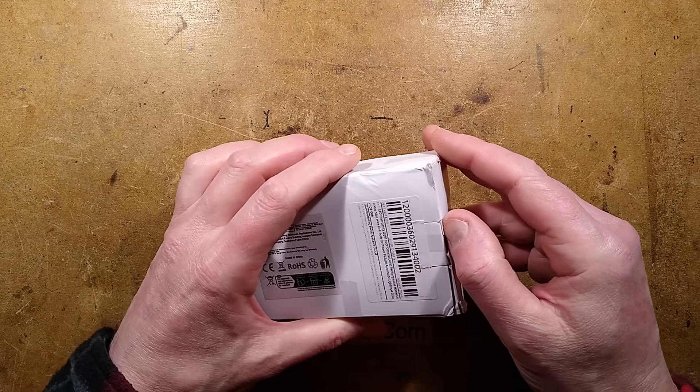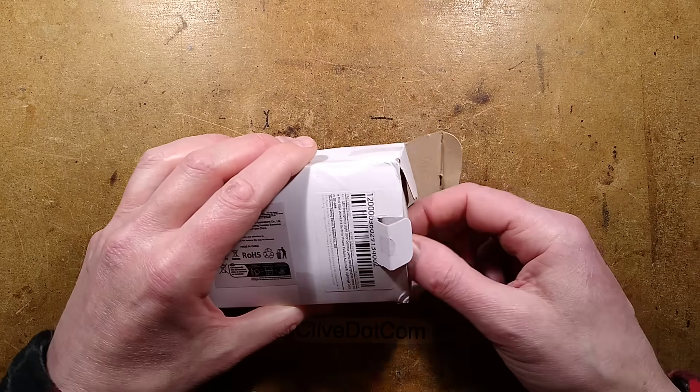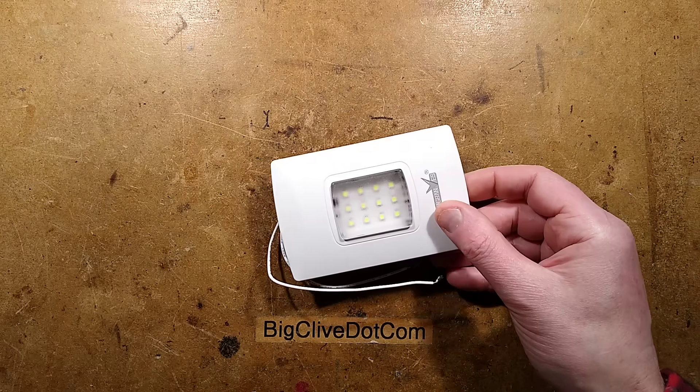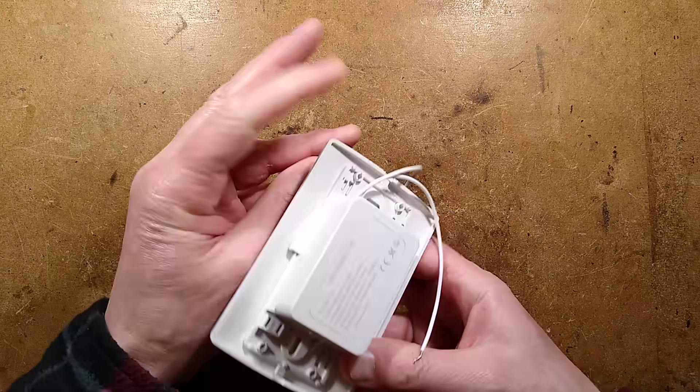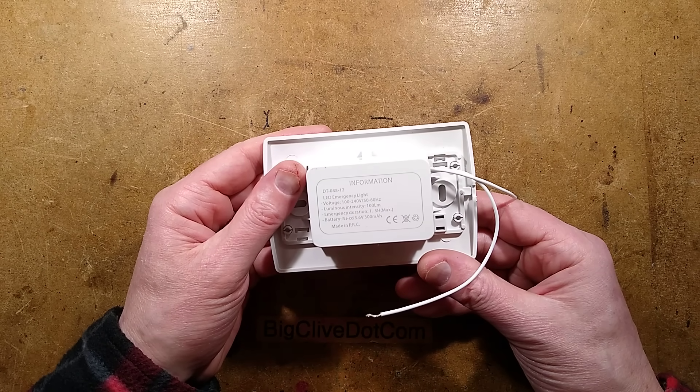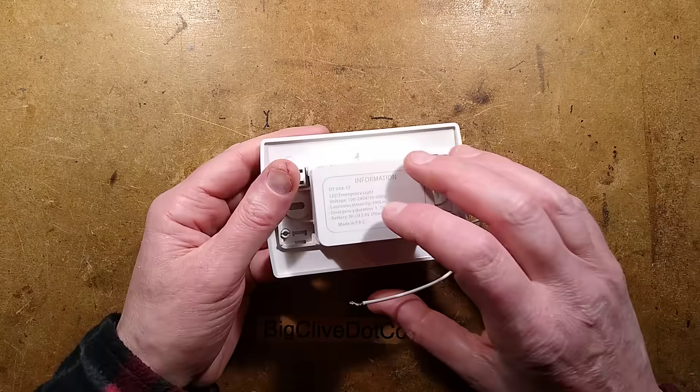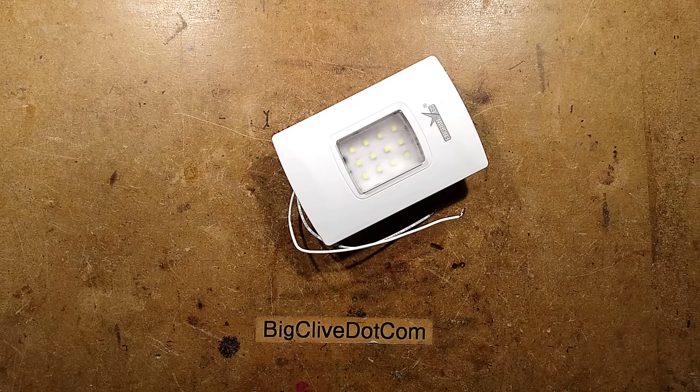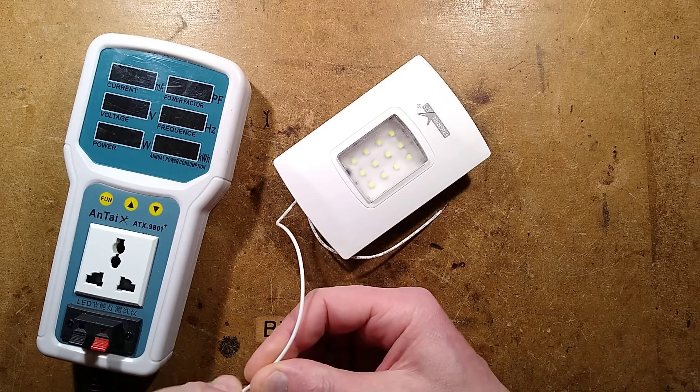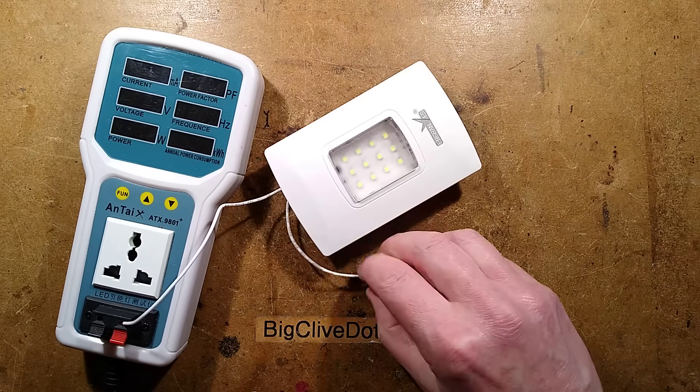Let's take a look at another random emergency light from AliExpress. This one was notable for claiming that it used nickel cadmium cells. I think this one cost about five dollars. Let's give it a test. The back says LED emergency light, 100 to 240 volts. Oh, battery NiCAD 3.6 volts, 300 milliamp power. Let's bring in the power analyzer and put it on test to see what sort of power it draws in standby, and then we'll open it up and take a look at the circuitry as we usually do.